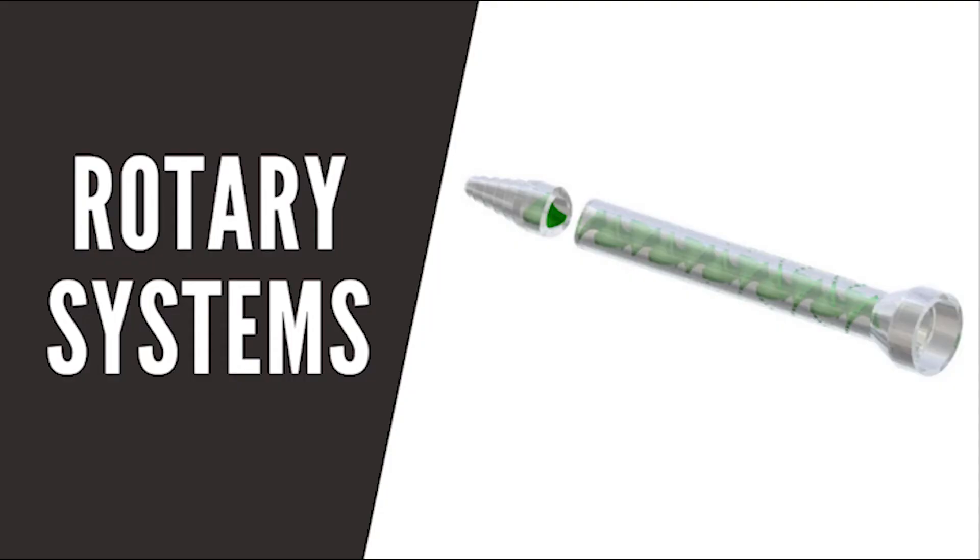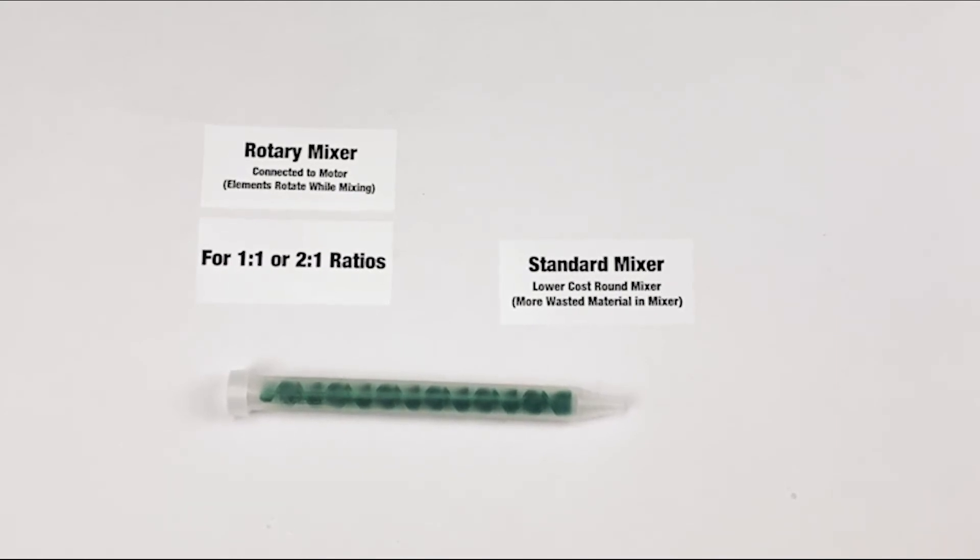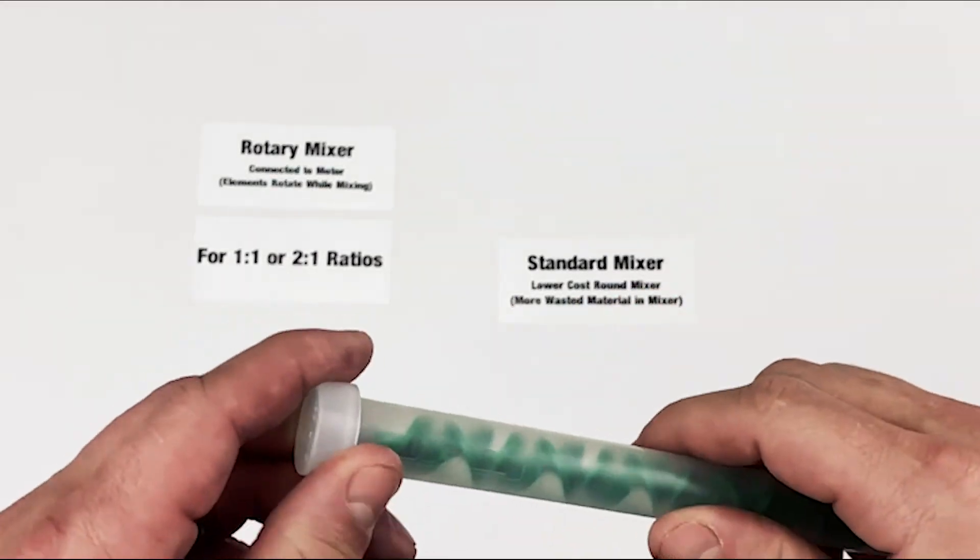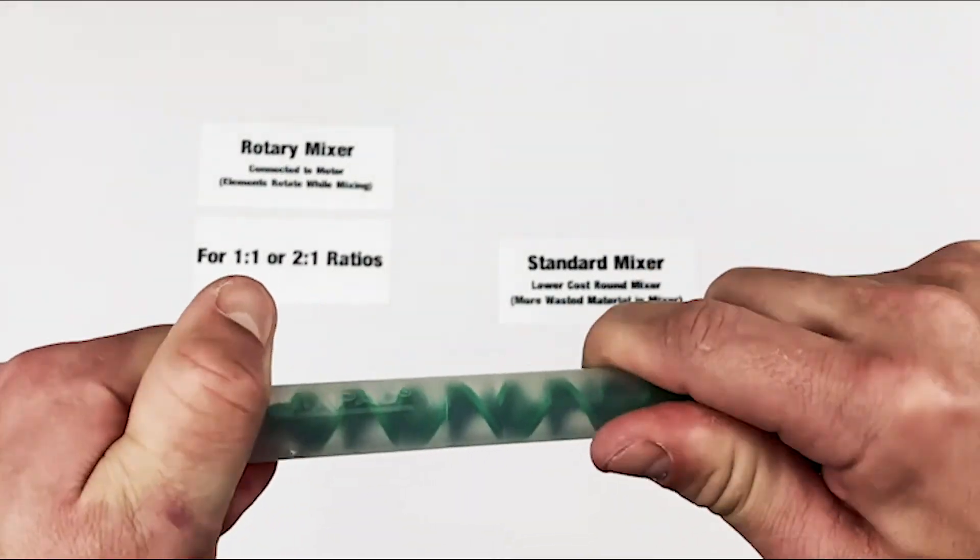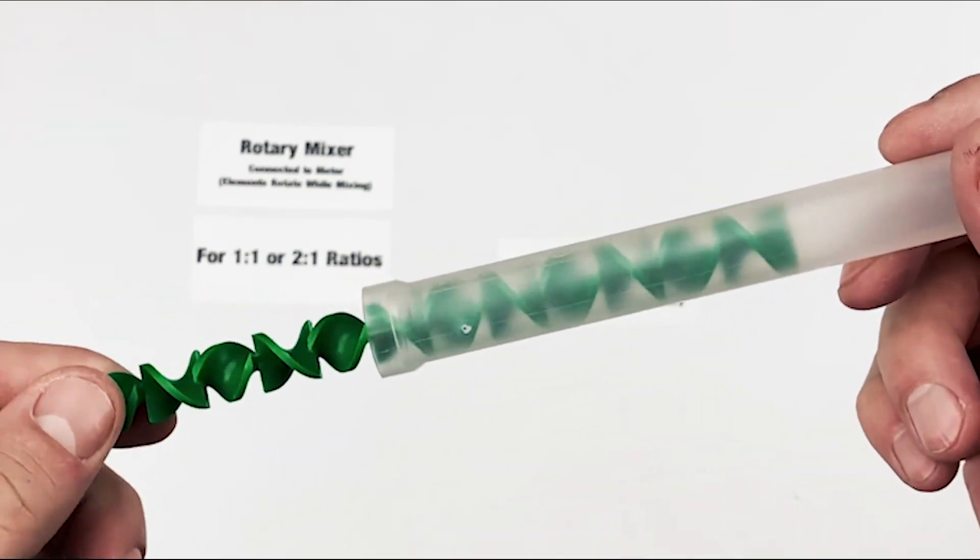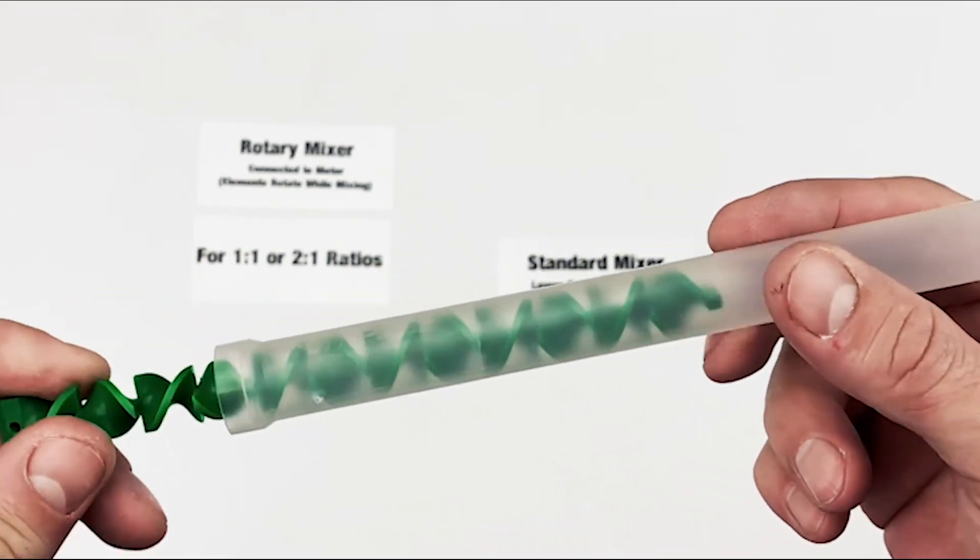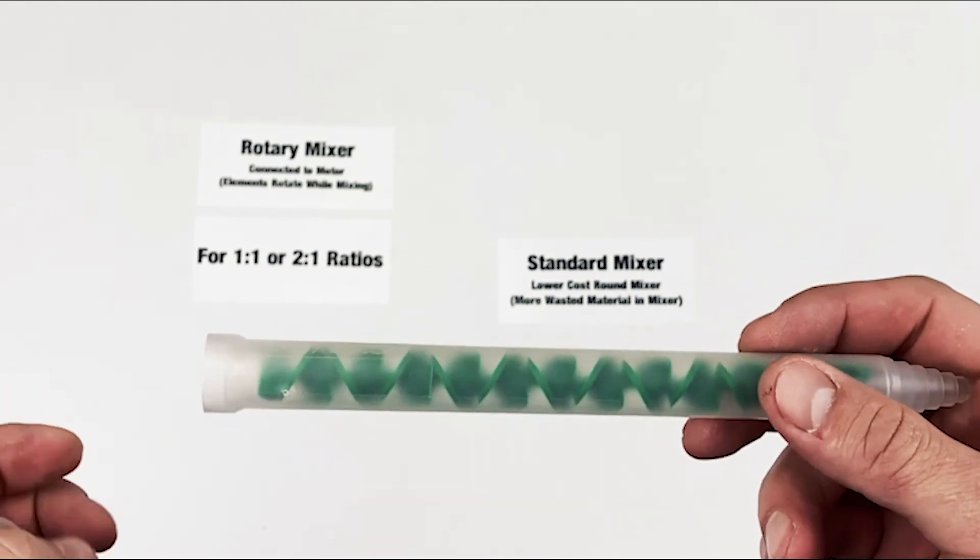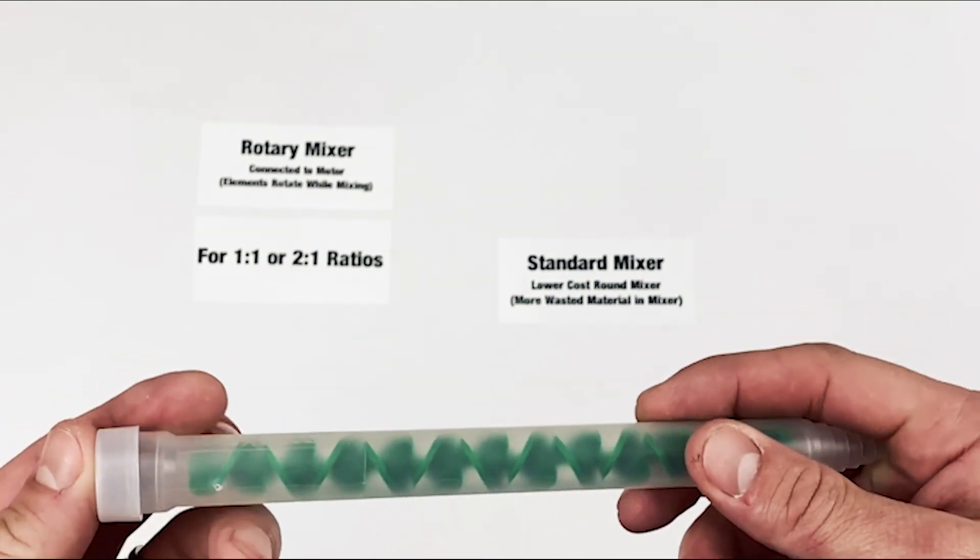Rotary Systems. Last on our list of static mixer nozzles is what is known as a Rotary Static Mixer. The Sulzer MixPak MSR Series Rotary Mixer has elements that actually spin when the material is being dispensed. This creates a type of tornado mixing effect and is generally used on meter mix equipment for dispensing hard-to-mix foams or urethane elastomers.